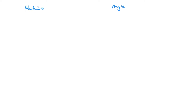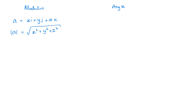Two more things we need to talk about: the modulus and the angle. The modulus of a vector — if vector A is XI plus YJ plus ZK — then the modulus is the square root of X squared plus Y squared plus Z squared. If you want to know more about that, it's just 3D Pythagoras, which you would have done in IGCSE or GCSE.